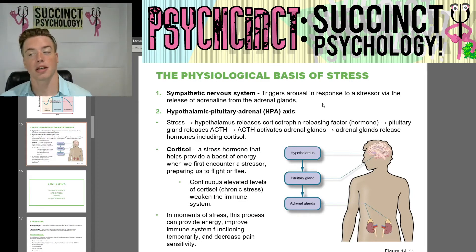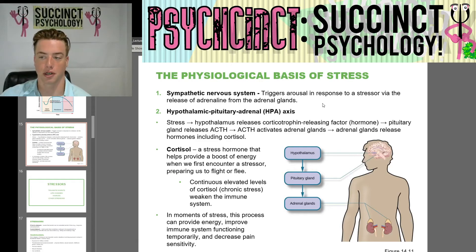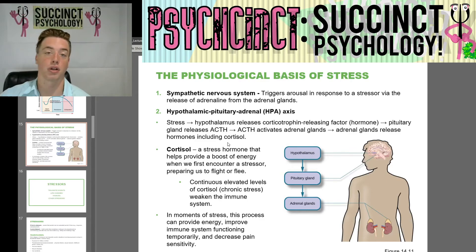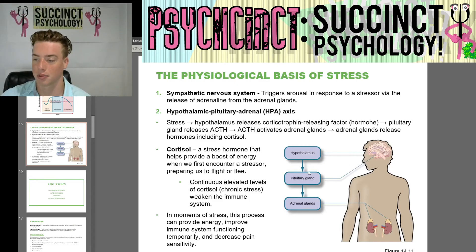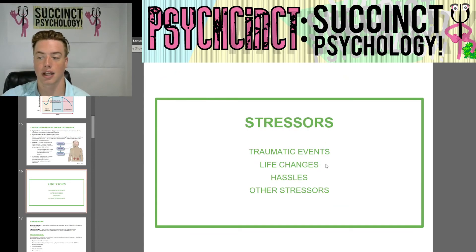The physiological basis of stress: the sympathetic nervous system triggers arousal in response to a stressor via the release of adrenaline from the adrenal glands. The hypothalamic-pituitary-adrenal axis works as follows: stress leads the hypothalamus to release corticotropin-releasing factor or hormone, then the pituitary gland releases ACTH, ACTH activates the adrenal glands, and the adrenal glands release hormones including cortisol. Cortisol is a stress hormone that helps provide a boost of energy when we first encounter a stressor, preparing us to fight or flee. Continuous elevated levels of cortisol under chronic stress weaken the immune system, making you get sick more easily. In moments of stress, this process can provide energy, improve immune system functioning temporarily, and decrease pain sensitivity.